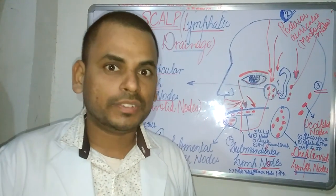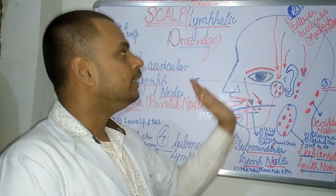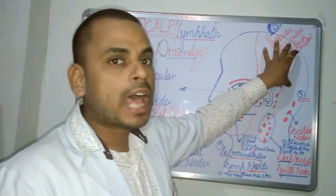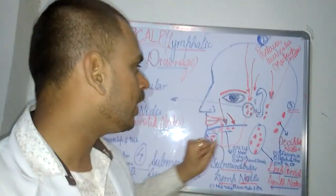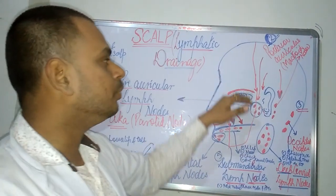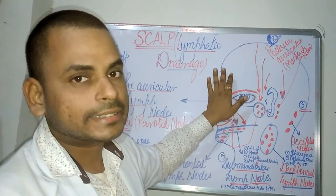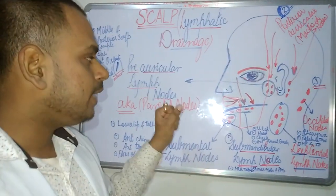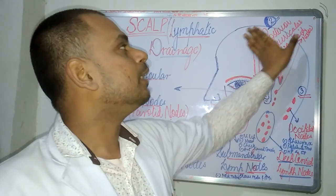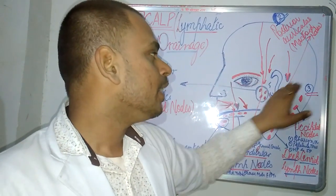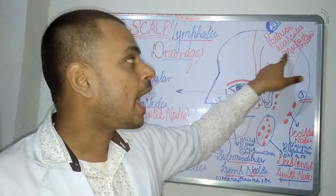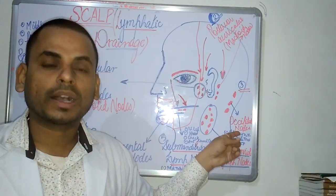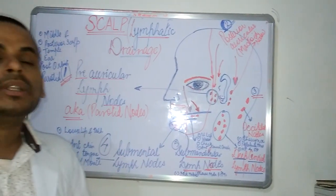When looking at the lymphatic drainage of the scalp, the entire scalp can be divided into three segments: the anterior scalp, the posterior scalp, and the posterior-most part of the scalp. The anterior scalp drains into the pre-auricular or parotid nodes; the middle and posterior scalp drains into the posterior auricular and mastoid nodes; and the posterior-most part drains into the occipital nodes.